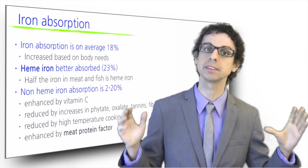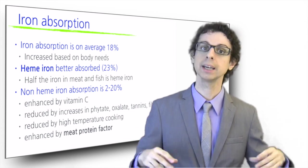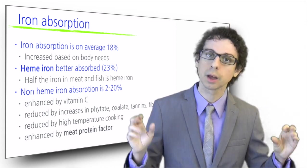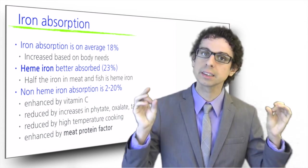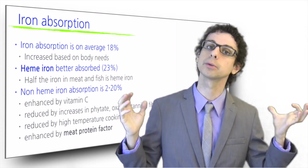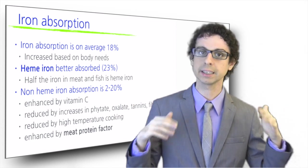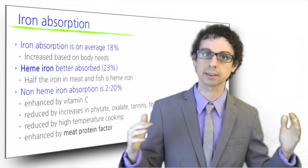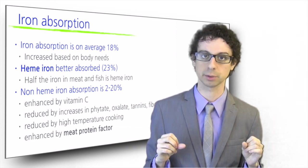When non-heme iron is eaten with meat or fish, its absorption increases. We're not exactly sure what it is in meat and fish that accomplishes this and so we call it the meat protein factor. Very likely it is the presence of meat peptides that enhances non-heme iron absorption.